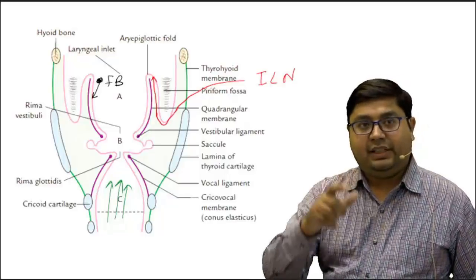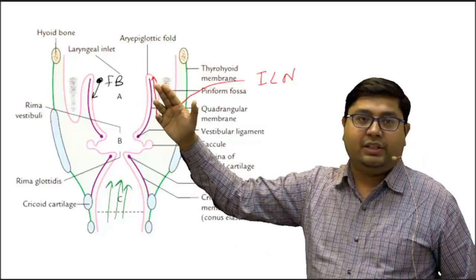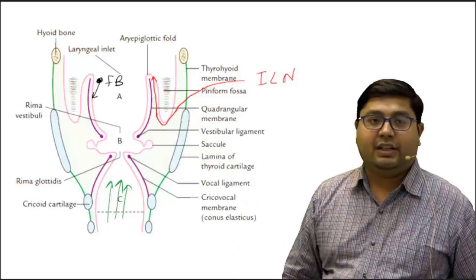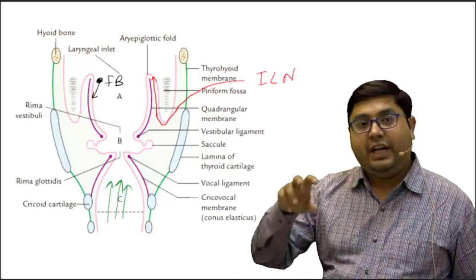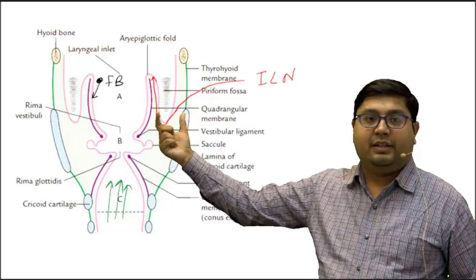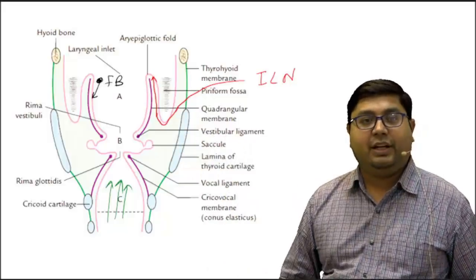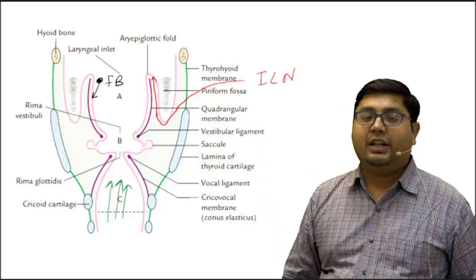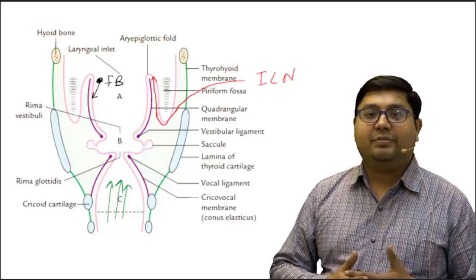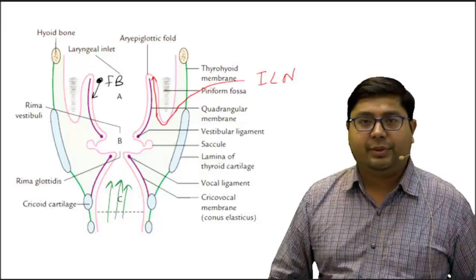However, in the present case, the foreign body did not enter the laryngeal inlet — it instead lodged in the piriform fossa, as the inlet is usually closed. When attempting to remove this foreign body surgically in this region, the internal laryngeal nerve may get damaged. If the internal laryngeal nerve is damaged, the afferent pathway for the cough reflex is disrupted, meaning the cough reflex may be suppressed in such a patient — a very important clinical consideration.